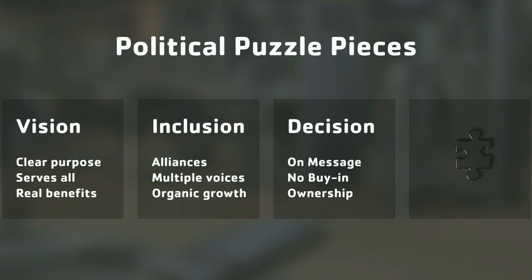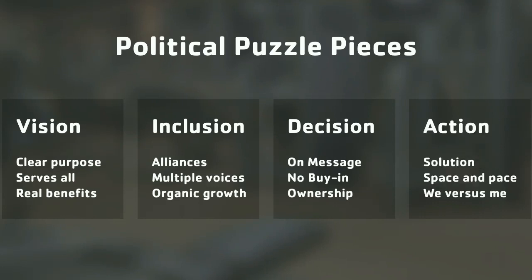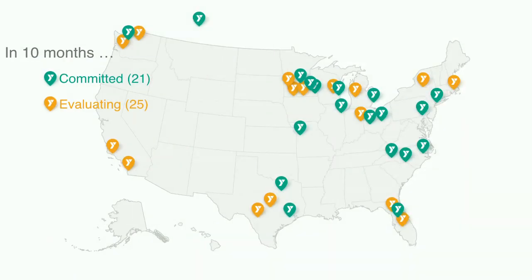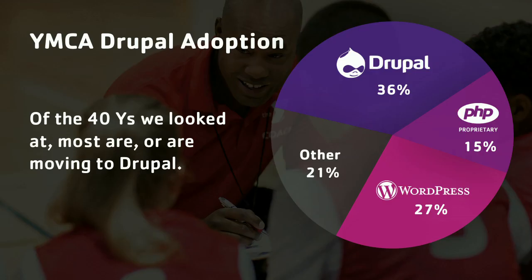First, we share a clear vision of what OpenY is and the benefits, serving all YMCAs. Next is inclusion — building alliances, ensuring people have voices and organic growth. Decision making must be clear: no buy-in required, no money to spend. We take a 'we versus me' approach — solutions must work for all, not just Twin Cities. Over the last 10 months, 21 YMCAs are committed to the platform and another 25 are evaluating.